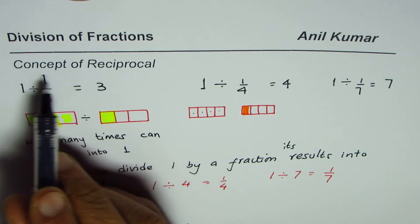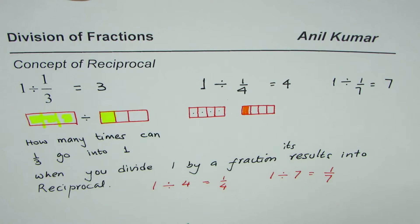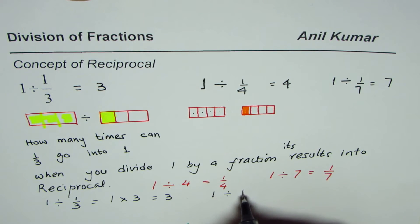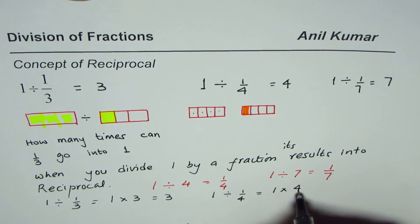So we can also write this expression as one divided by one over three is equal to one times three which is three. Similarly one divided by one over four is equal to one times four which is same as four.